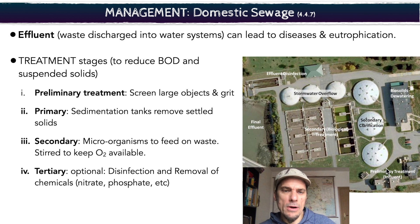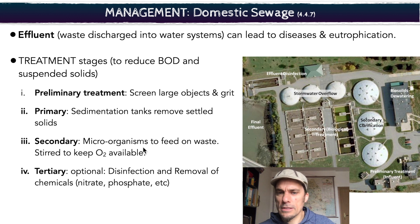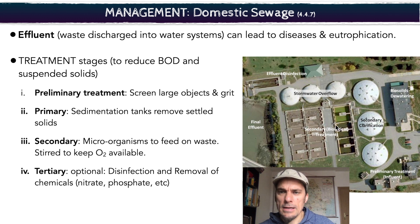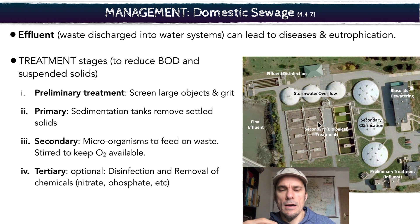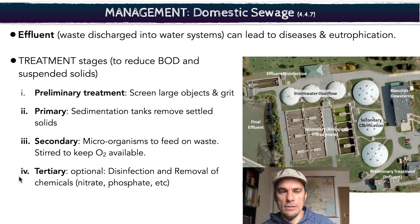Then we have primary sedimentation tanks, where things are left to settle and the sludge is removed off the bottom of this slurry. Then microorganisms will feed on this waste — you need to stir it with water, and you can see that taking place in these areas over here. It starts to get mixed and mixed and mixed, and eventually once the microorganisms have eaten off all the toxins, it moves on to the last level. Different treatment plants have different tertiary treatments.